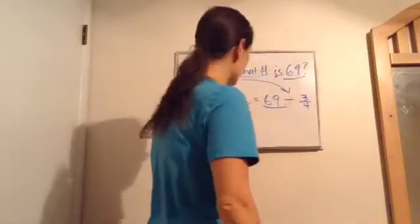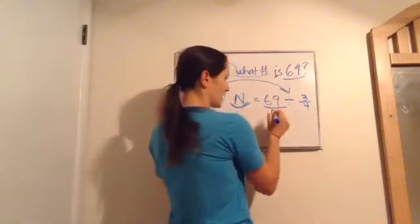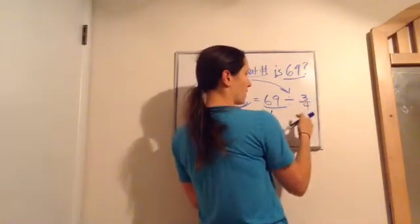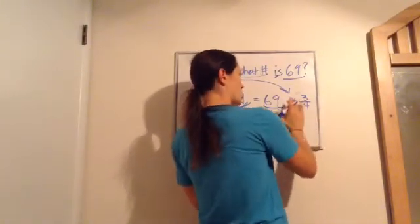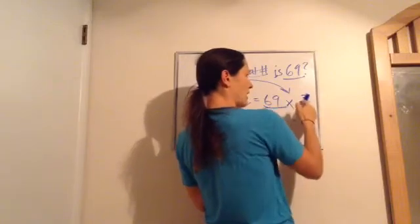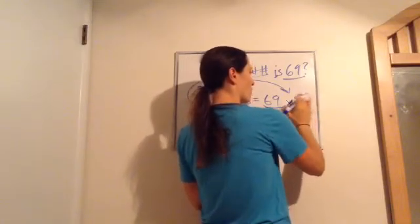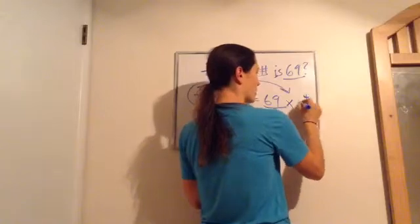69 over 1. So I would take 69 over 1 divided by three-fourths and then when I change the division to multiplication, that becomes 4 over 3. Very good.